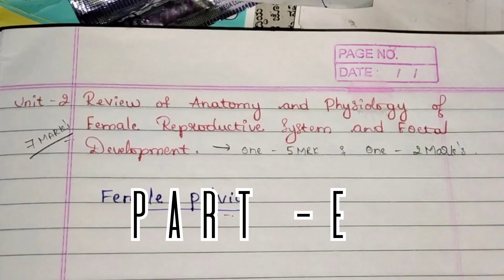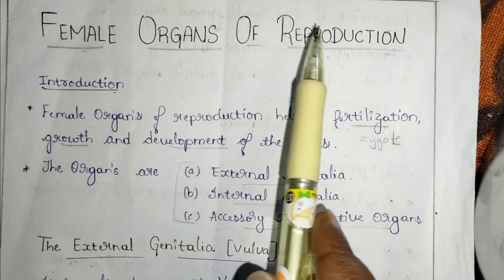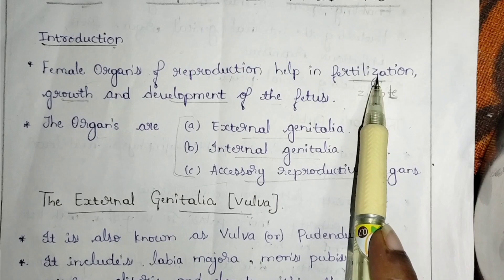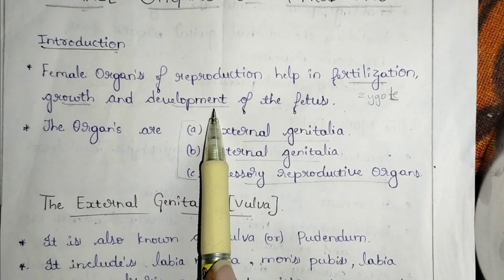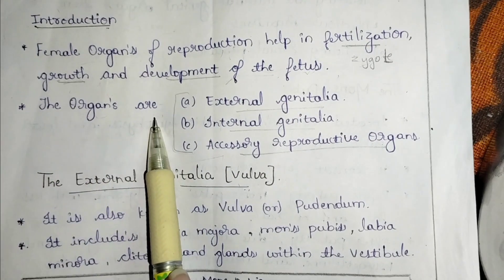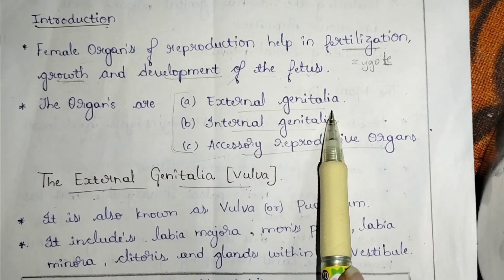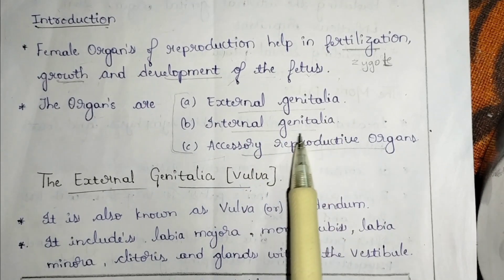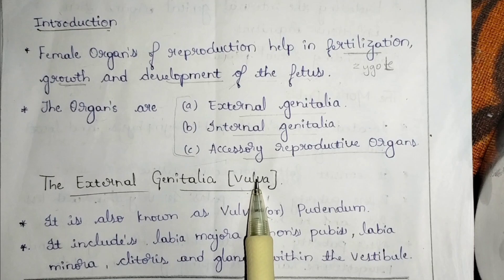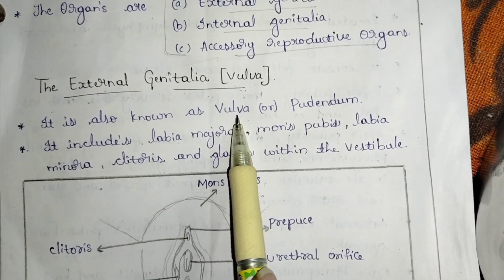Hello guys, this is unit 2 part E. Today's topic is female organs of reproduction. Female organs of reproduction help in fertilization, growth and development. These organs present in the female reproductive system are divided into three groups: external genitalia, internal genitalia, and accessory reproductive organs.